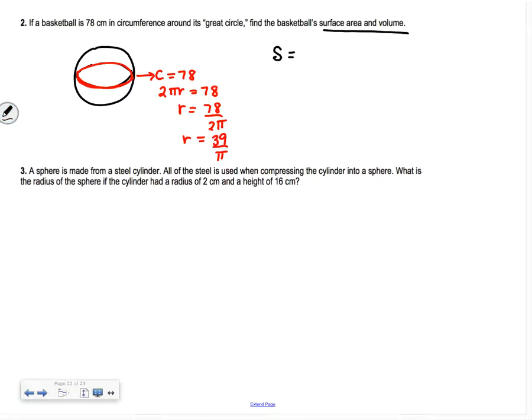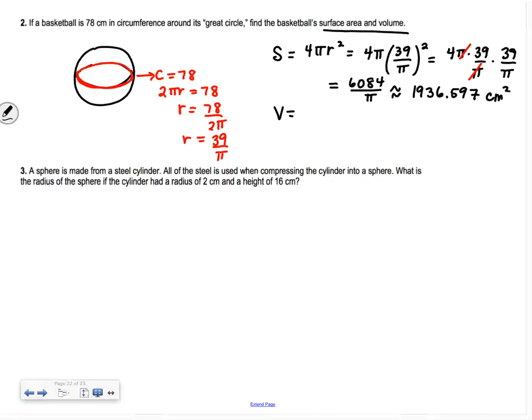We're trying to find the surface area and volume. Surface area is 4πr². It's 4 times π times (39/π)². You'll have 39/π twice, and one of those π's will reduce out with the π on top. So 39 times 39 times 4, which is 6,084/π. Or if you want the decimal approximation, 1936.597 centimeters squared.